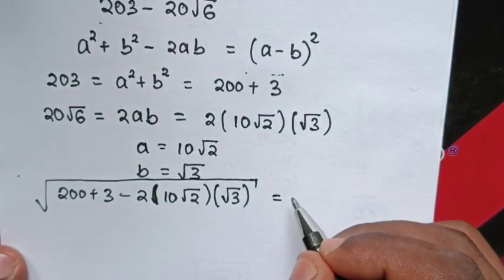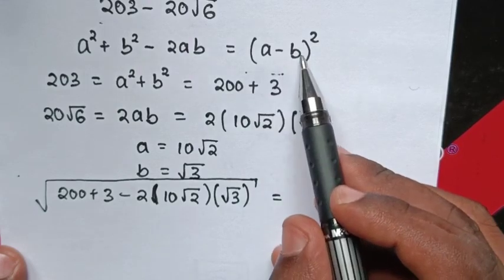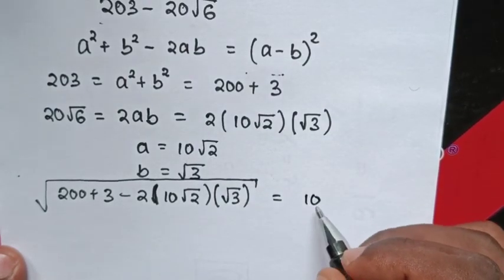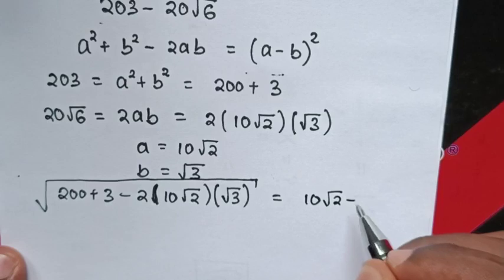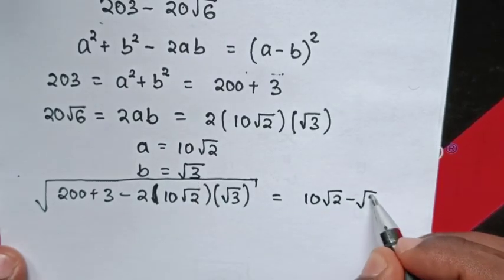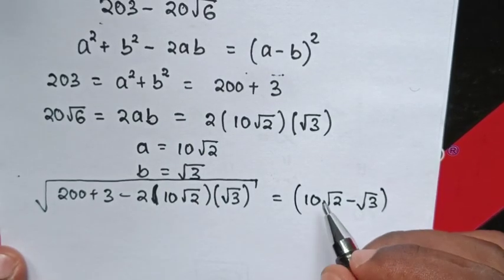Then this will be equal to a minus b, where a is 10 square root of 2 minus b is square root of 3, bracket square.